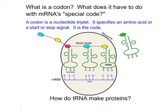What is a codon? Looking at this diagram, we have the backbone of an mRNA molecule, and the bases are divided into groups of three — triplets. Each triplet is a codon. A codon is a nucleotide triplet, and each one specifies a particular amino acid, or a start or stop signal. Start means we begin production of a new protein; stop means this is the last amino acid.